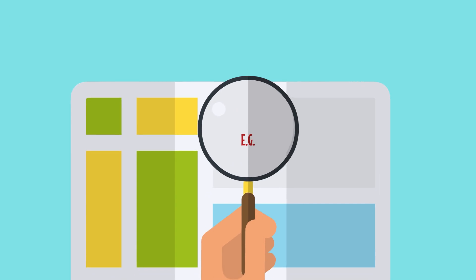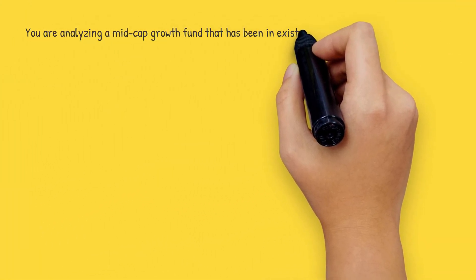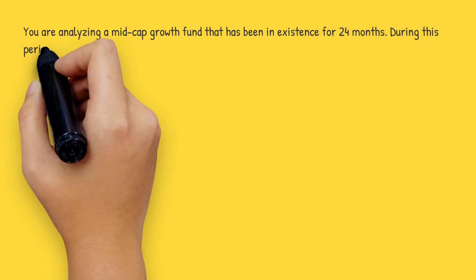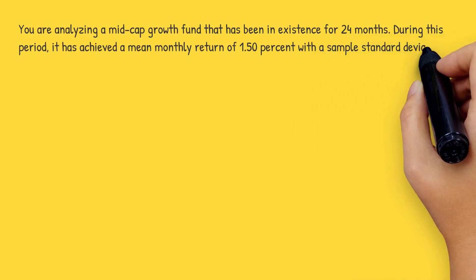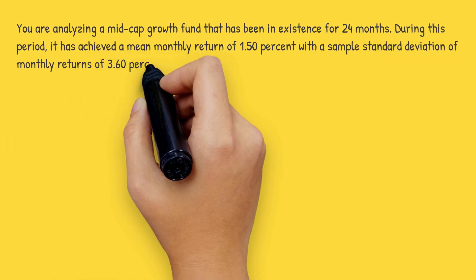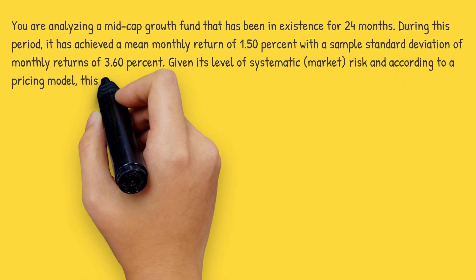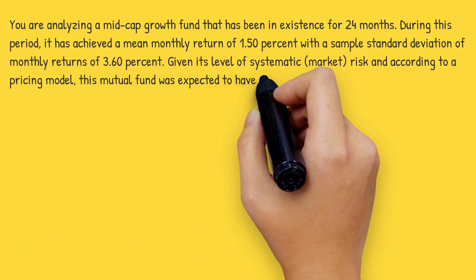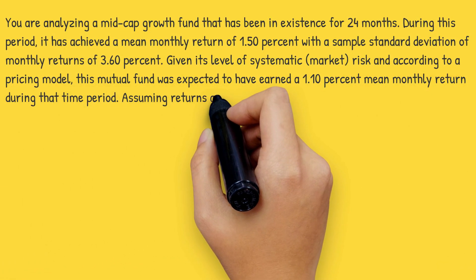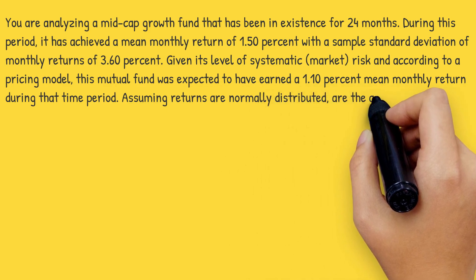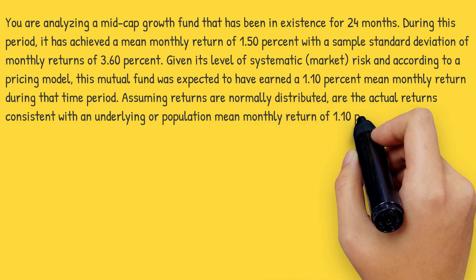Let's look at an example. You are analyzing a mid-cap growth fund that has been in existence for 24 months. During this period, it achieved a mean monthly return of 1.5% with a sample standard deviation of 3.6%. Given its level of systematic risk and according to a pricing model, this fund was expected to have earned a 1.1% mean monthly return. Assuming returns are normally distributed, are actual returns consistent with a population mean monthly return of 1.1%?